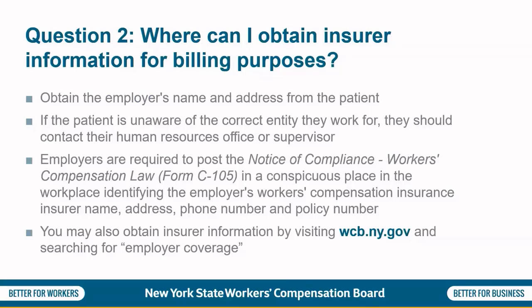Question 2: Where can I obtain insurer information for billing purposes? You should obtain the employer's name and address from the patient. If they are unaware of the correct entity, they should contact their human resources office or supervisor. In New York State, employers are required to post the Notice of Compliance Workers' Compensation Law Form C105 in a conspicuous place in the workplace, identifying the employer's workers' compensation insurance insurer name, address, phone number, and policy number. You may also obtain insurer information by visiting the Board's website and searching for employer coverage.